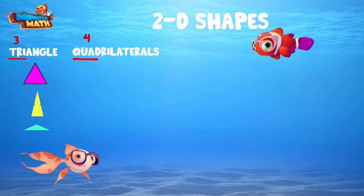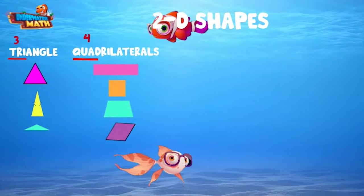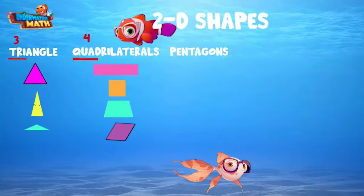Next up is quadrilaterals. Quad means four, so all quadrilaterals have four sides. These are shapes like rectangles, squares, trapezoids, and rhombus.